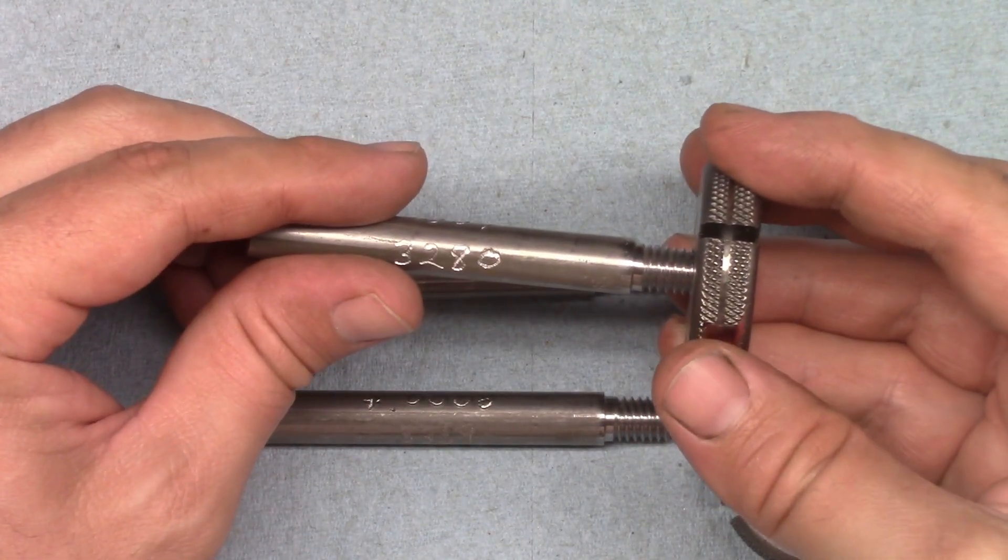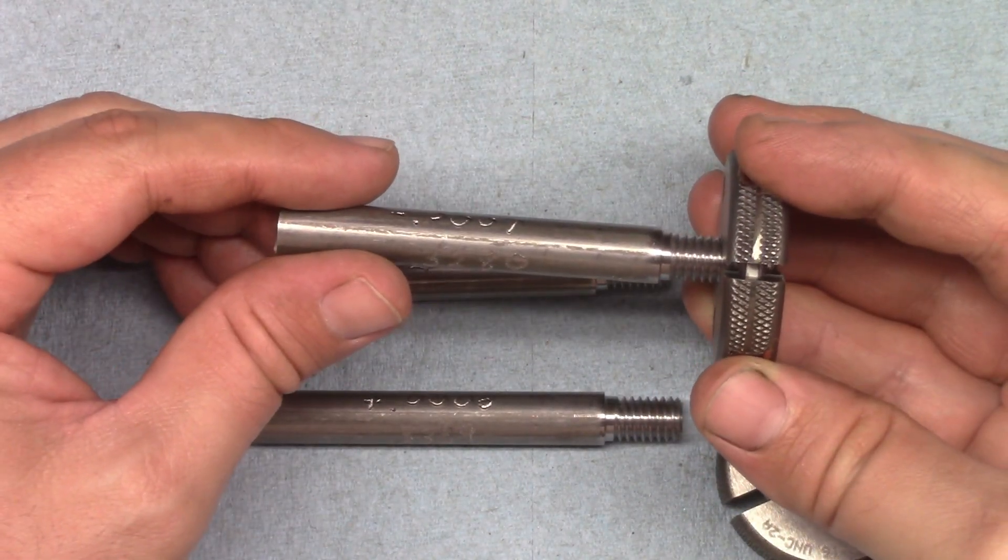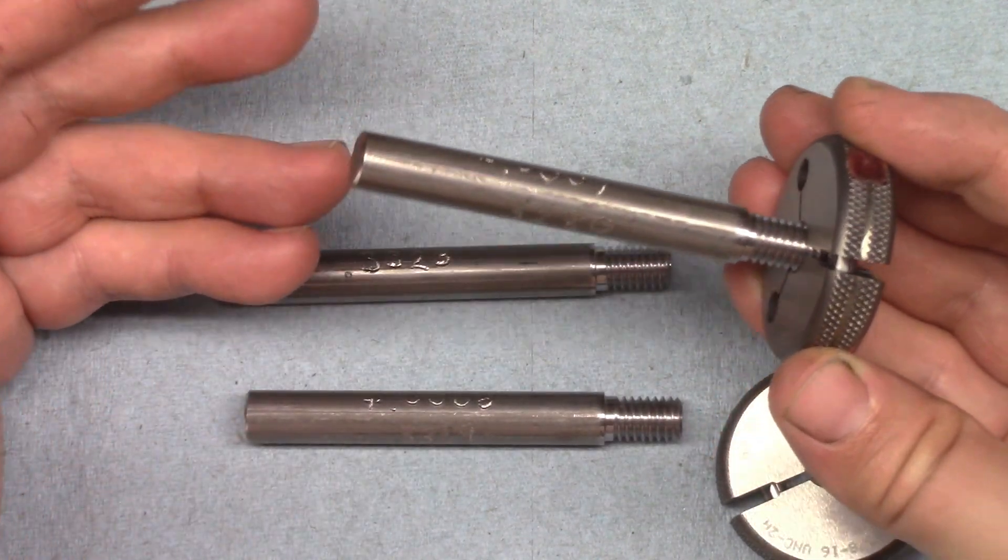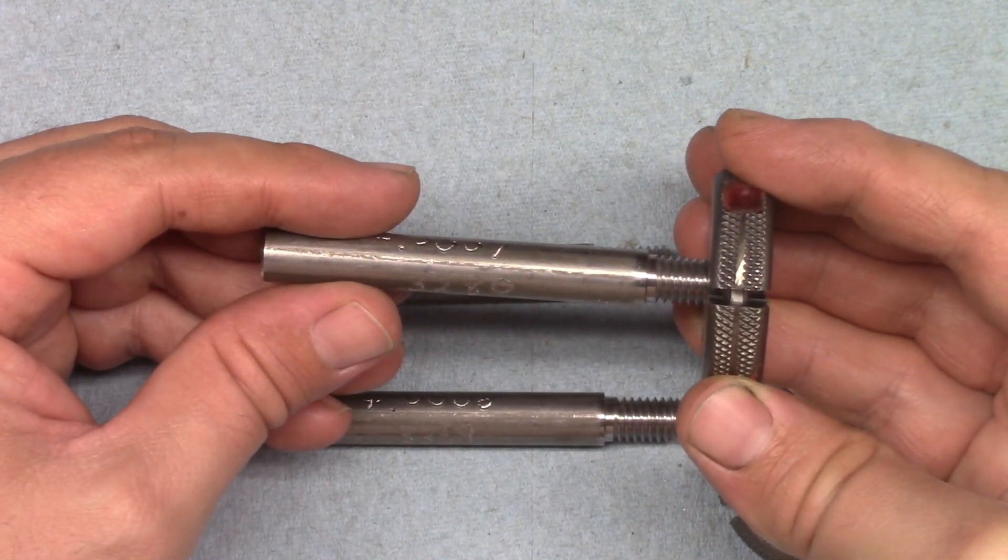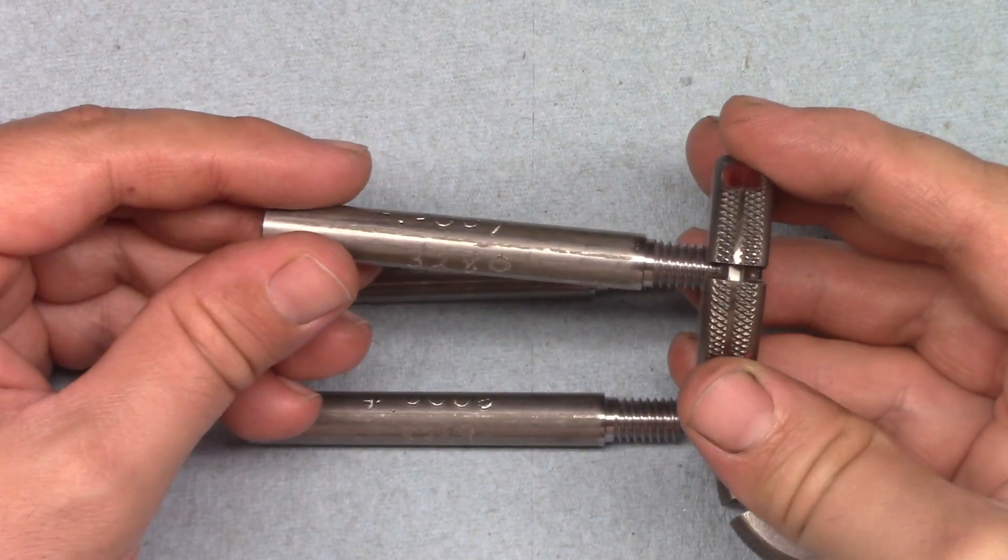Depending on how forgiving your quality control person is that day, anywhere from one to three threads is acceptable. But if the gauge and part thread together completely, even if it's rough going, that means the part is smaller than the gauge.